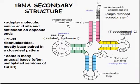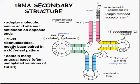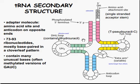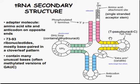Let's look a little deeper into the tRNA secondary structure. tRNA is an adapter molecule. The amino acid site and the anticodon are on opposite ends. Each tRNA is 73 to 93 ribonucleotides, mostly base-paired in a cloverleaf pattern. It contains many unusual bases, often methylated versions of GUAC. There's the dihydrouracil loop, and the three prime cap with the CCA — remember from the last video that was switched. Then we have the pseudouracil C loop, and an extra variable arm, which can sometimes be longer depending on the tRNA. And of course the anticodon loop at the bottom.